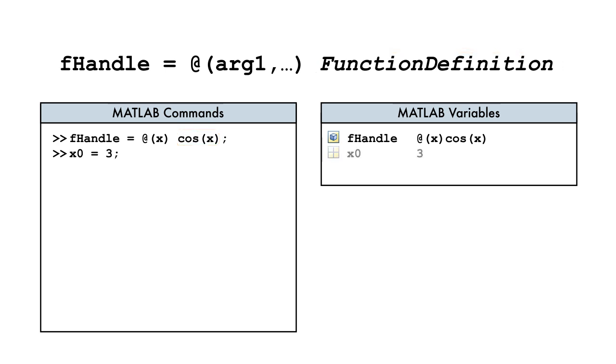Now we can find the local minimum of cosine by passing the variable fhandle to the fminSearch function.